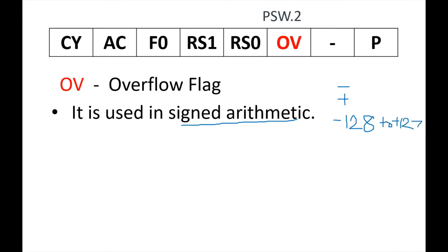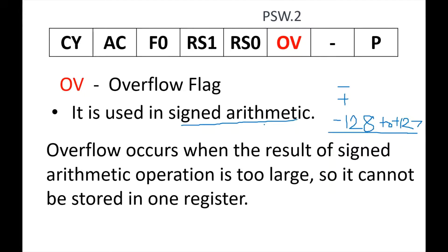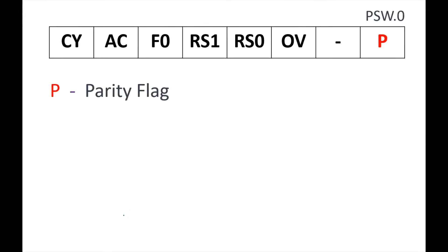If the result is out of this range — for example, adding 90 and 60 gives 150, which is out of range — then the overflow flag becomes 1; otherwise it is 0. Overflow occurs when the result of a signed arithmetic operation is too large, meaning it cannot fit or be stored in a single register.